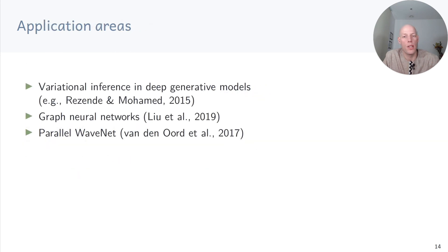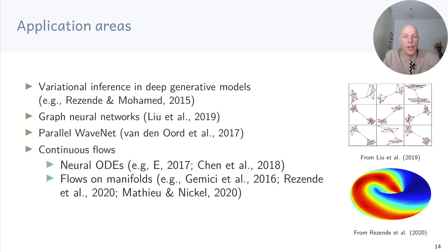Normalizing flows are used in many applications, for example in variational inference, deep generative models, graph neural networks, and Parallel WaveNet. We can also think of the normalizing flow discussed here as a discrete-time dynamical system, since we write zk as a function of zk-1. There are also extensions to continuous-time dynamical systems, or continuous flows, and these ideas are used in neural ODEs or to define flows on manifolds.